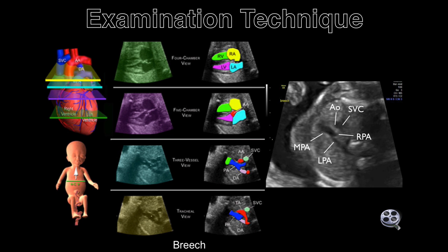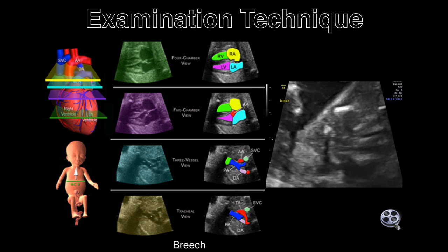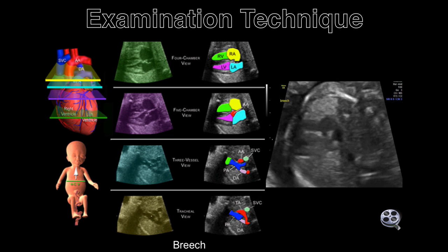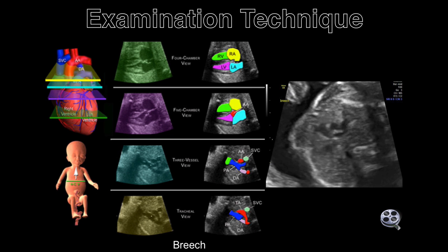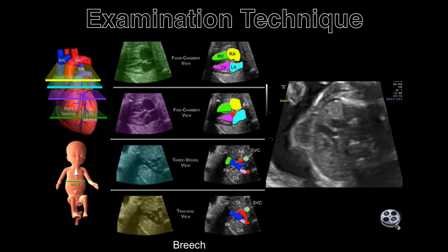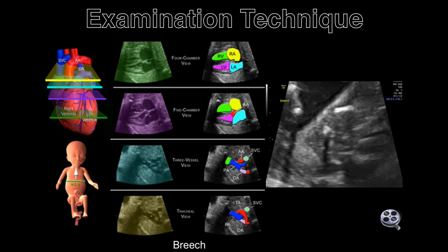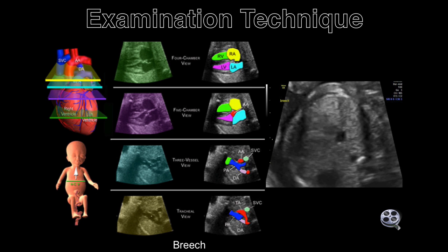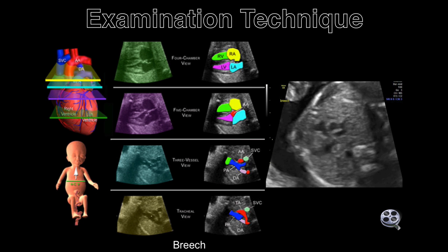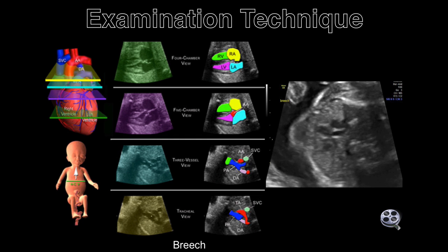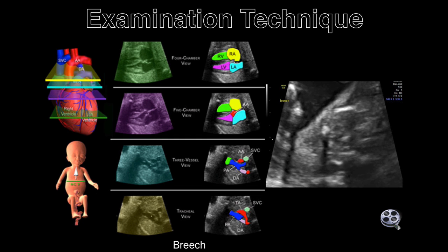3. The three-vessel view. Cephalad to the five-chamber view is the three-vessel view. This view contains the main pulmonary artery originating from the right ventricle, continuing on as the ductus arteriosus as it enters the thoracic aorta. Perpendicular to the main pulmonary artery is the cross-section of the ascending aorta and the superior vena cava. Because this view demonstrates the main pulmonary artery perpendicular to the ascending aorta, the criteria are met to exclude transposition of the great arteries.